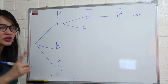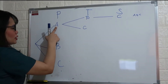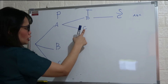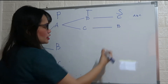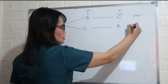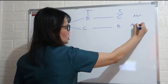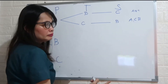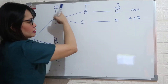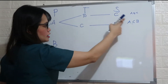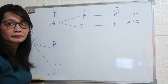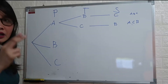For the second outcome: if member A is president and C is treasurer, therefore member B is the secretary. So the outcome is A, C, B — member A is president, member C is treasurer, and member B is secretary.